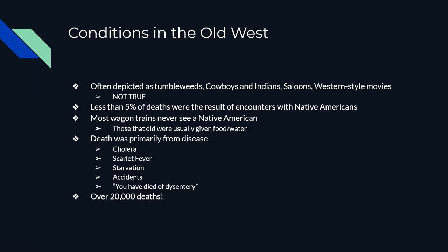There are a lot of deaths though — more than 20,000 people die along these trails moving out west. Most of those deaths are because of disease: cholera from unclean water, scarlet fever, starvation, and accidents. If you've ever played the game Oregon Trail, you're probably familiar with the term 'You have died of dysentery.' It's a rough go. You pack up everything you've ever known, move someplace you've never been, and never get to go back where you came from.